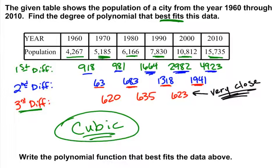Our next task is to write the polynomial function that best fits the data. When dealing with years as interval time measurements, we adjust our x-coordinates so our first measurement is zero. So 1960 becomes 0, 1970 becomes 10, 1980 becomes 20, 1990 becomes 30, 2000 becomes 40, and 2010 becomes 50. We use these adjusted values rather than the actual years, because those large year numbers don't mean anything numerically — they're just labels assigned to years.